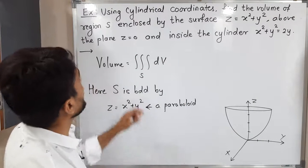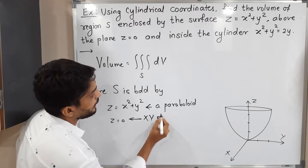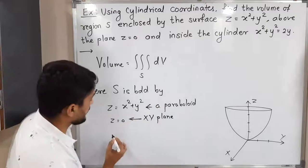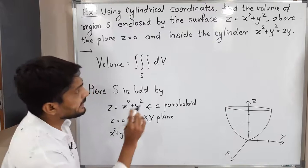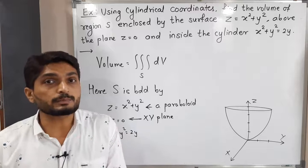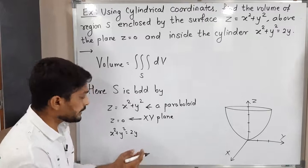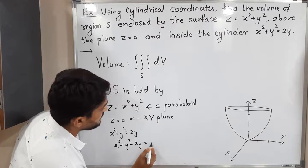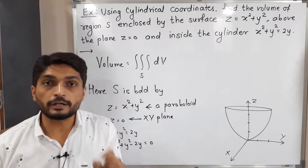We also have z = 0, which is the equation of the xy-plane. Next, we have x² + y² = 2y. They have clearly mentioned it's a cylinder, but it is not in standard form. I will express it in standard form. Shifting 2y to the left side: x² + y² − 2y = 0.